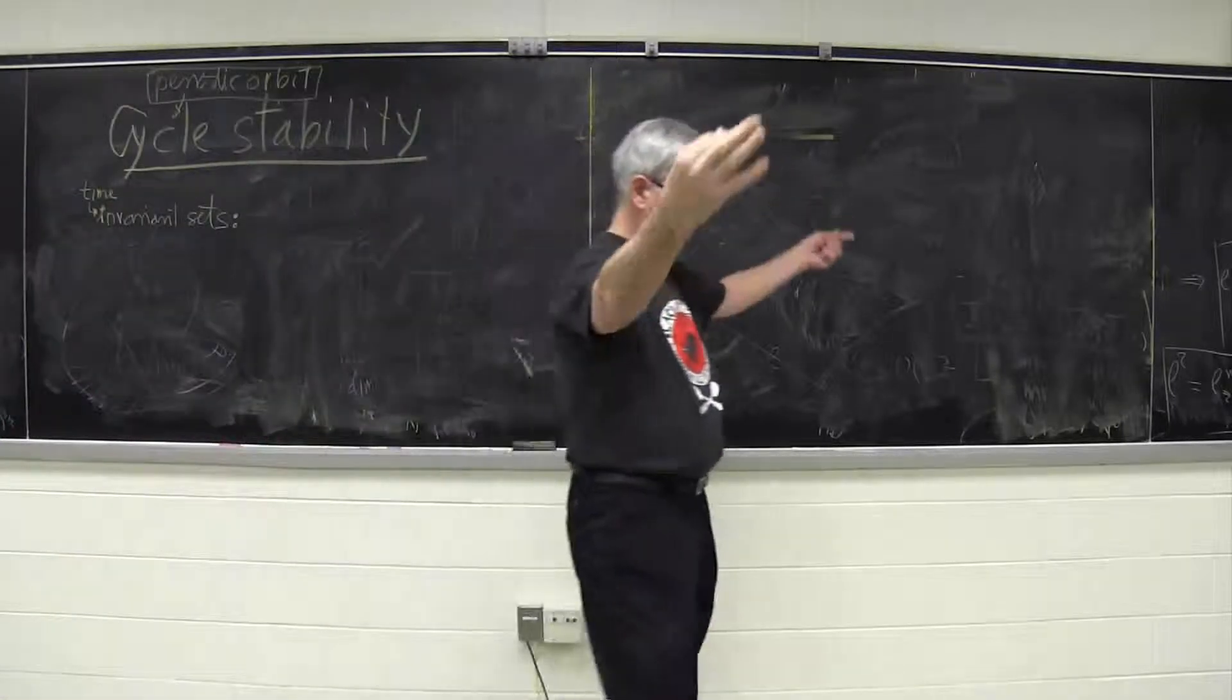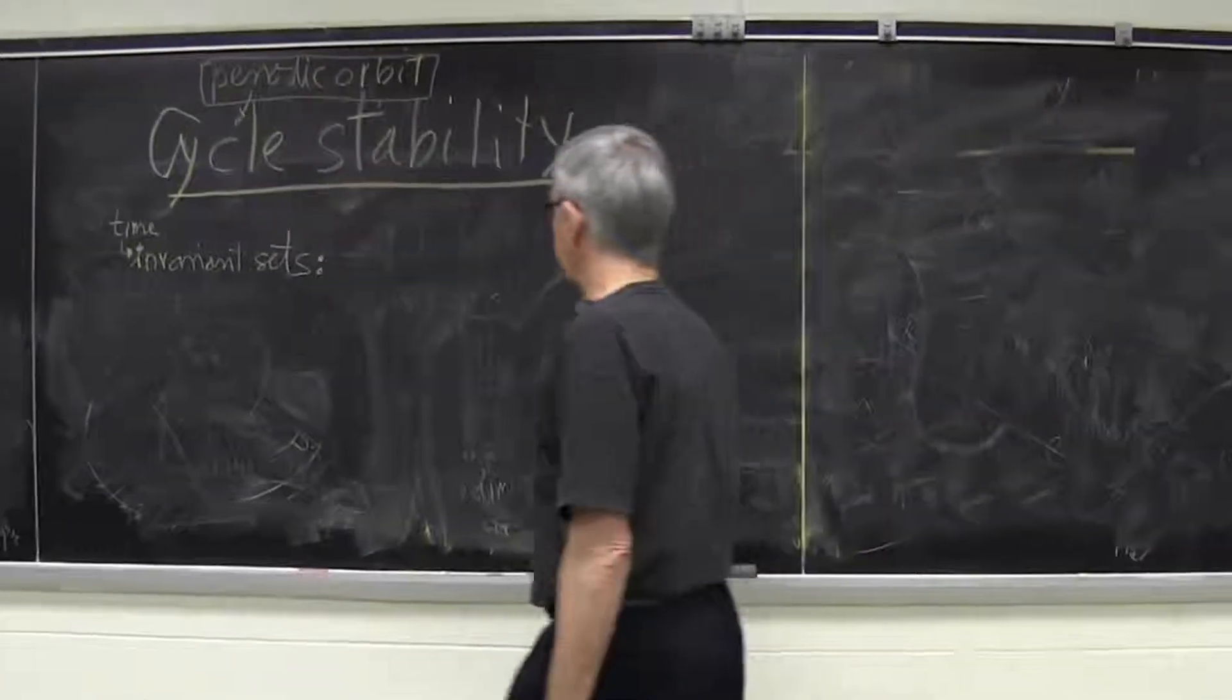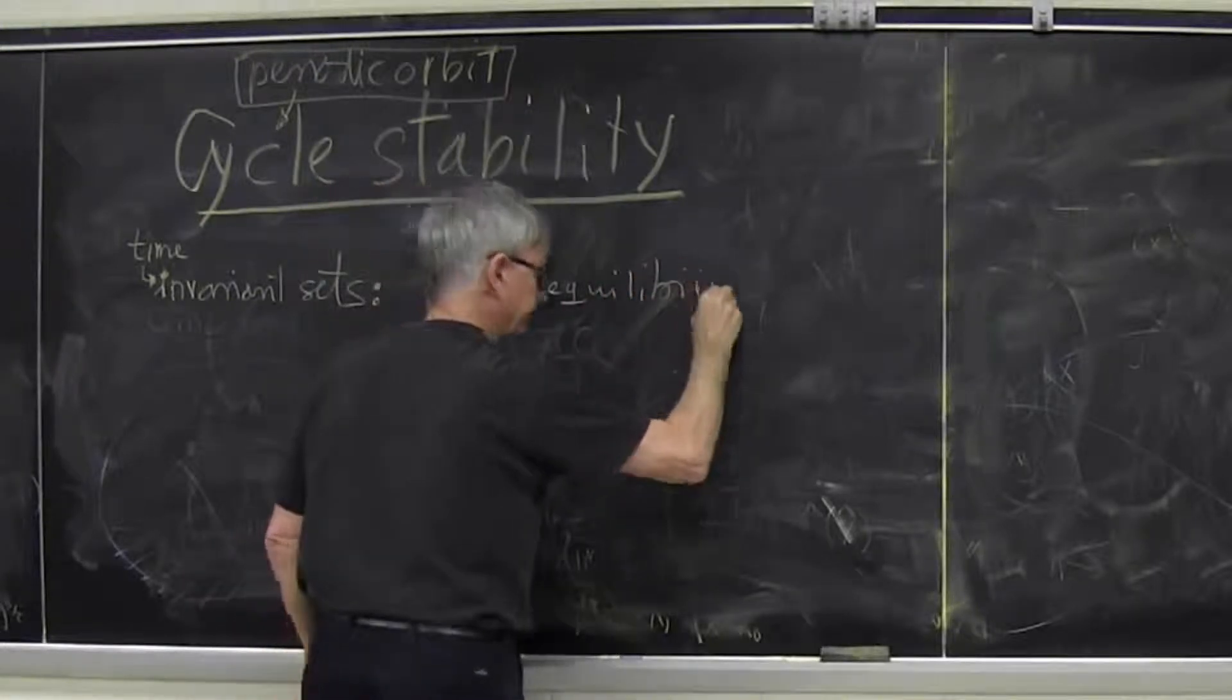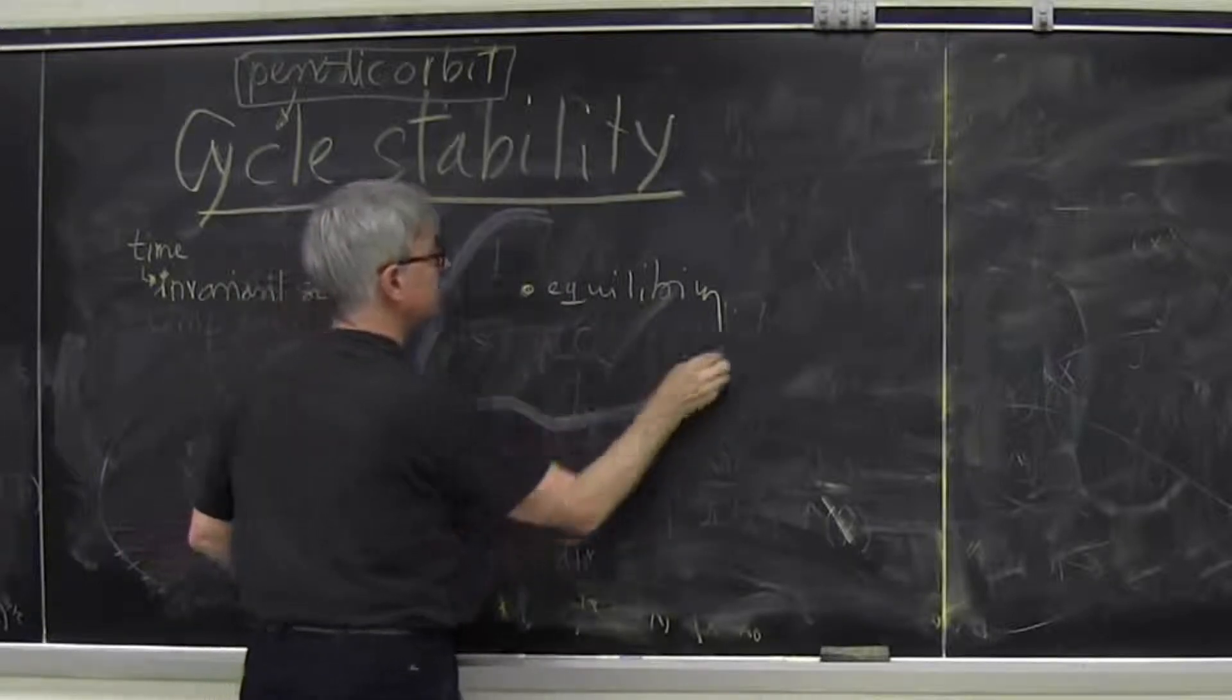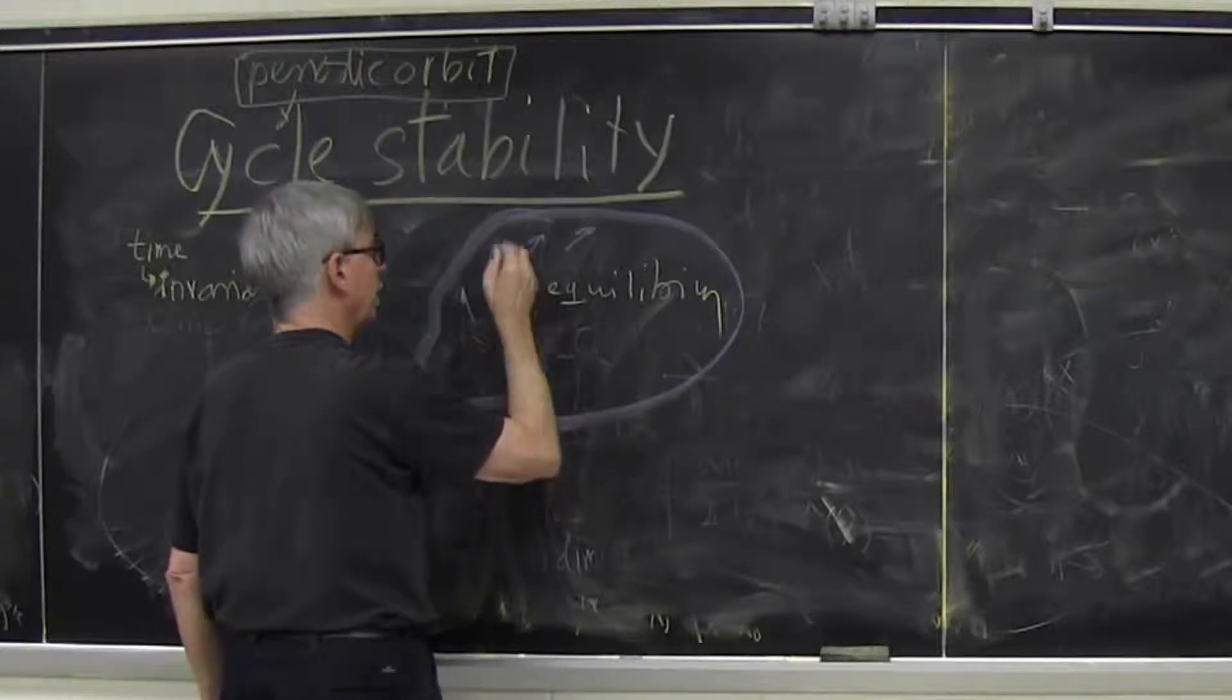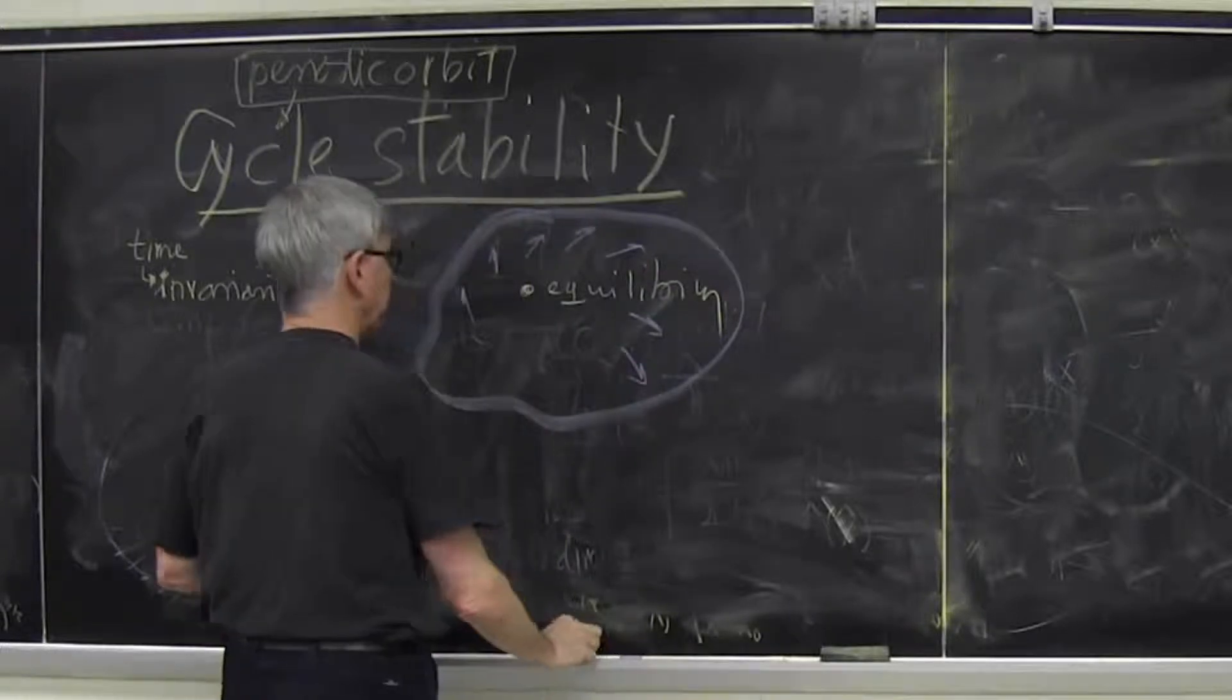So these are the subsets of my state space that don't change in time, so it's an equilibrium. So I'm in state space, and every place there is a law that tells me how I move. At this point it happens to be zero, this velocity is zero, so I don't move.